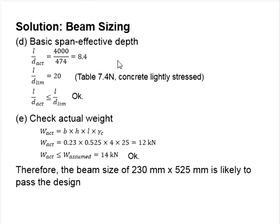Next, we check for the basic span-effective depth ratio. The actual L per d ratio is calculated from the effective length 4000 divided by the beam depth 474, which is equal to 8.4.